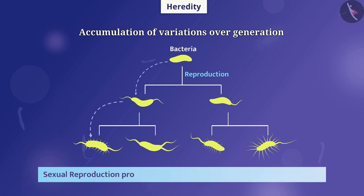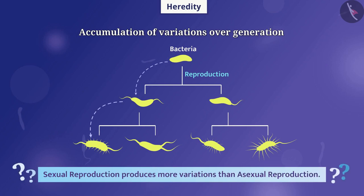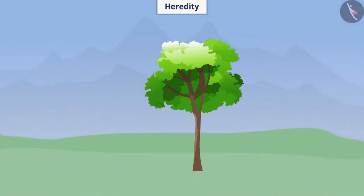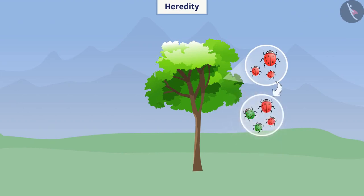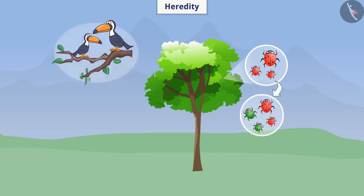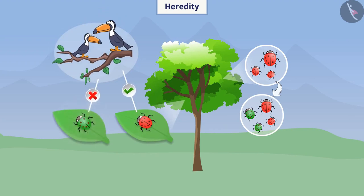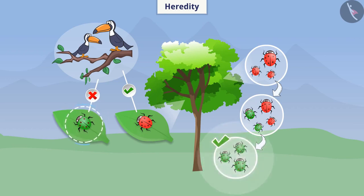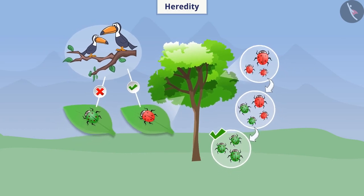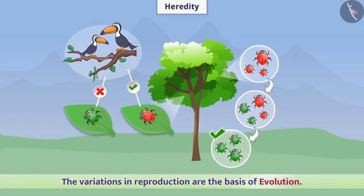Sexual reproduction produces more variations than asexual reproduction. Suppose there is a species of red insects on a tree. Due to accumulation of variations over generations, a new variety of green insects arises. If a bird comes to live on that tree, it can easily find and eat red insects, but green insects can hide in the green colour of leaves. In this way, there is a possibility of survival of the insect species. Variations help in survival of the species. Therefore, we can say that variations in reproduction are the basis of evolution.